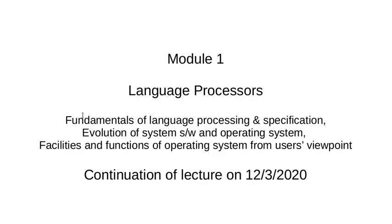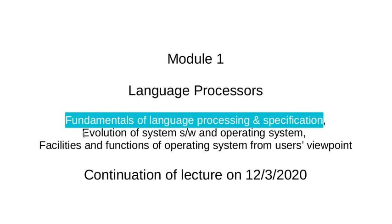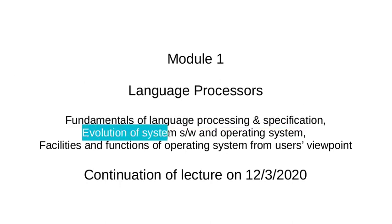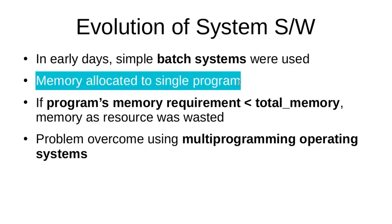With that, we come to the end of fundamental language processing and specification. The next part is the evolution of system software and operating systems. In the early days when PCs became popular, there were simple batch processing systems. In batch processing systems, the whole available memory could be allocated to a single program only — different programs could not run on the same memory location. So memory was allocated to a single program.